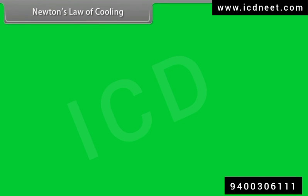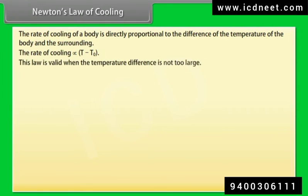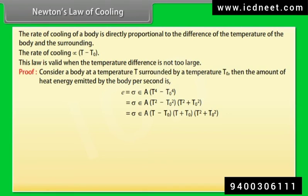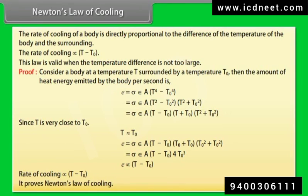Newton's Law of Cooling states that the rate of cooling of a body is directly proportional to the difference between the temperature of the body and the surroundings, i.e., rate of cooling is directly proportional to T minus T₀. This law is valid when the temperature difference is not too large. Proof: For a body at temperature T surrounded by temperature T₀, the heat energy emitted per second is E equals sigma epsilon A (T minus T₀)(T plus T₀)(T² plus T₀²). Since T is approximately T₀, E is directly proportional to T minus T₀, proving Newton's law of cooling.